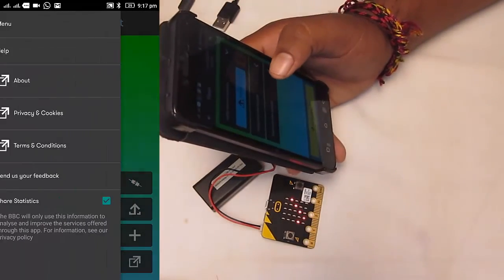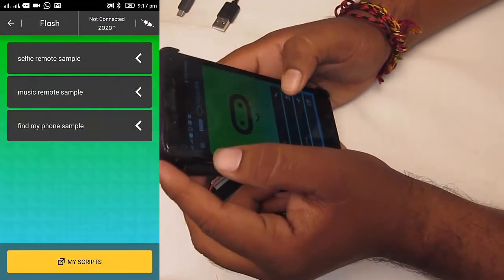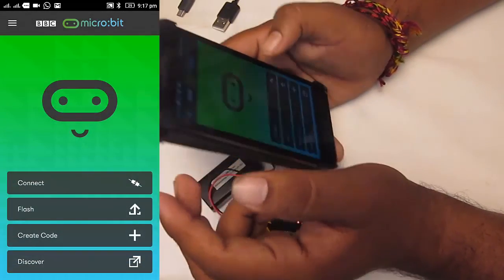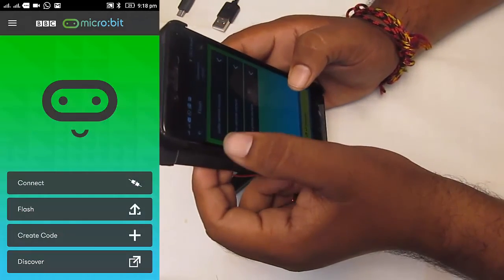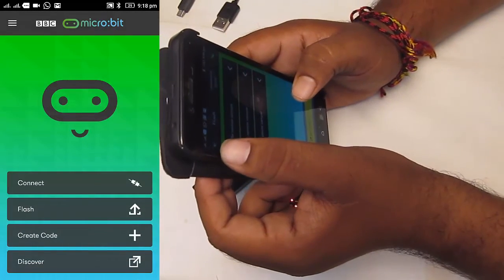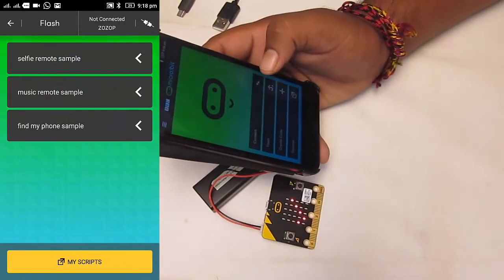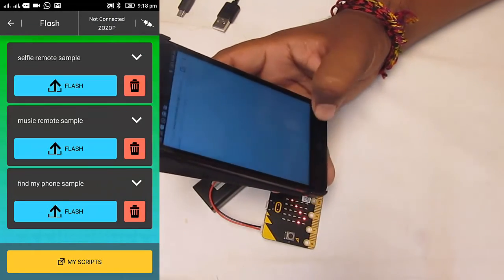Here there are a couple of samples you can put into the BBC micro:bit module, like selfie remote, magic remote, find my phone sample, and all those things.